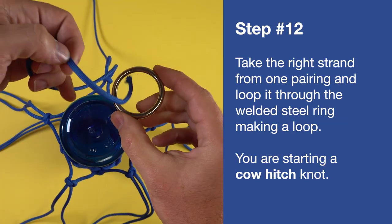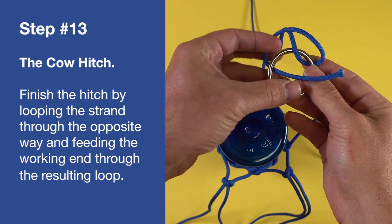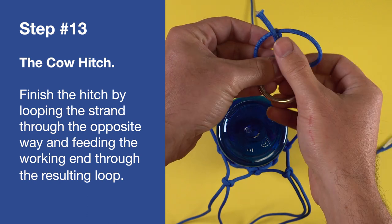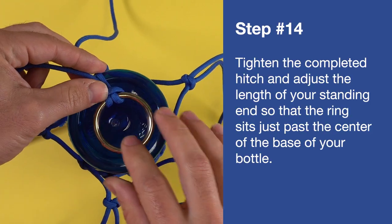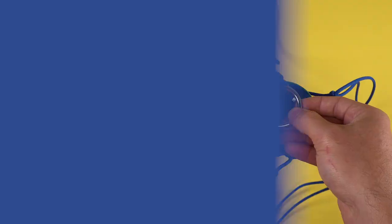Take the right strand from one pairing and loop it through the welded steel ring. The cow hitch. Finish the hitch by looping the strand through the opposite way and feeding the working end through the resulting loop. Tighten the completed hitch and adjust the length of your standing end so that the ring sits just past the center of the base of your bottle.